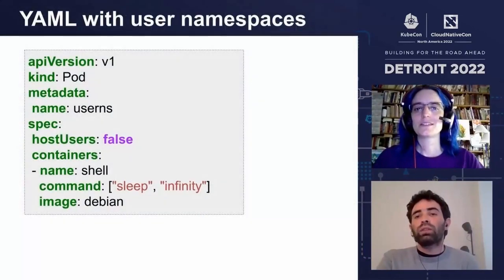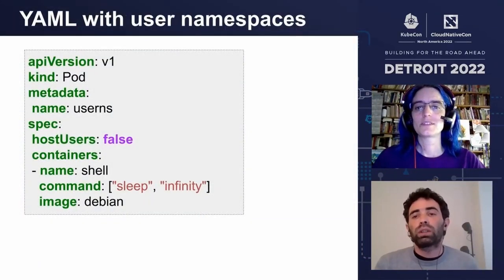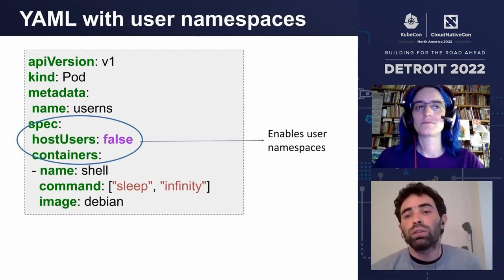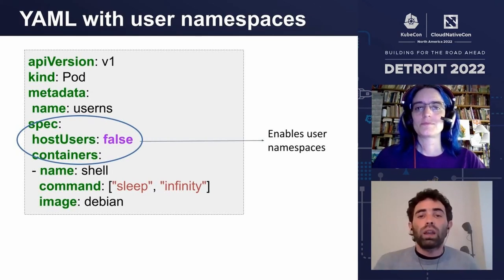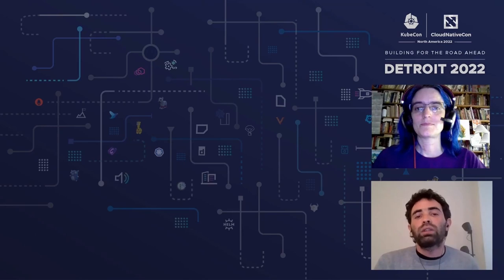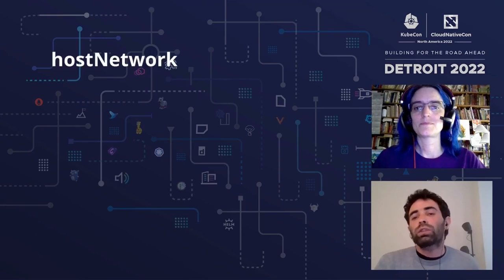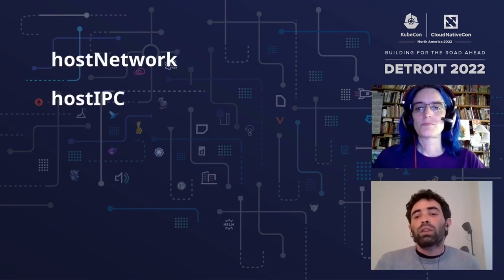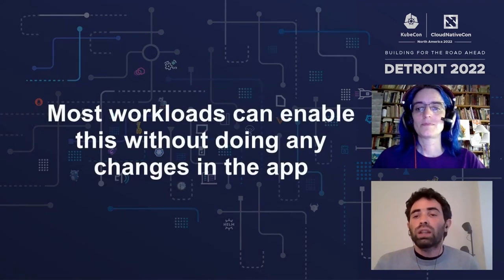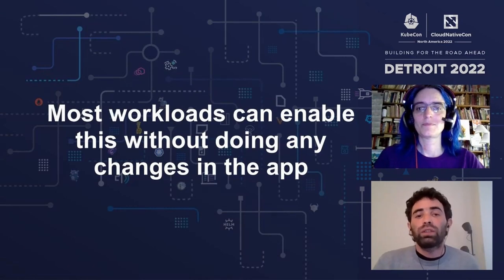To use this feature in Kubernetes, we just need to add the hostUsers field to the pod spec and set it to false to indicate that we don't want to use the host users. This will create a user namespace so the users are isolated. This follows the same syntax as other namespaces like hostNetwork or hostIPC. And what is super interesting is that the vast majority of workloads can enable this without doing any changes in the app and just benefit from the extra security.